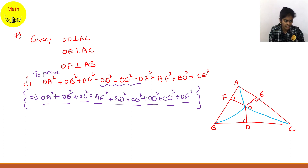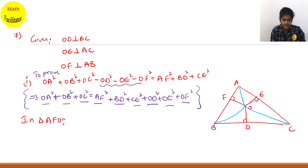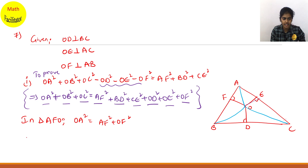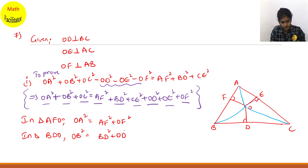Now, in triangle OAF — just as I told you — OA square equals AF square plus OF square. Next, in triangle OBD: OB square equals BD square plus OD square.